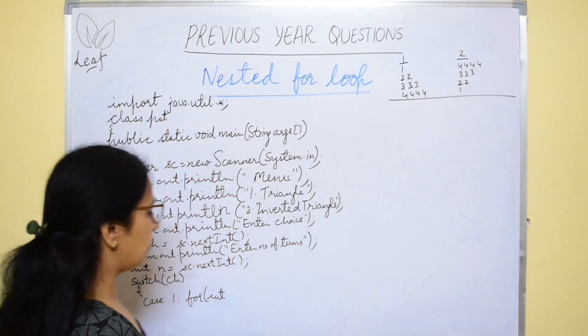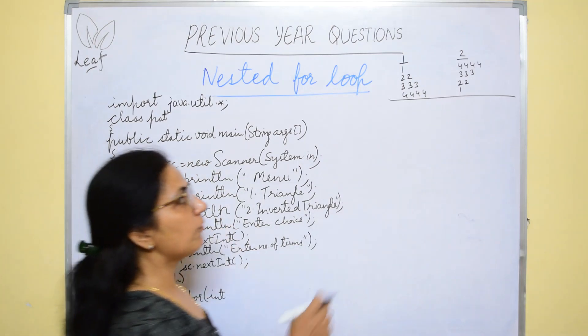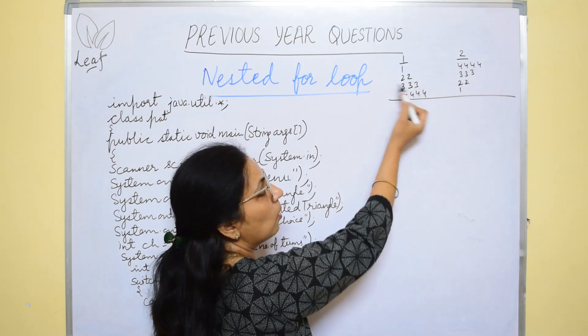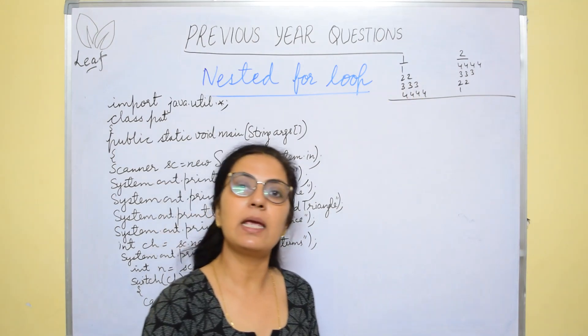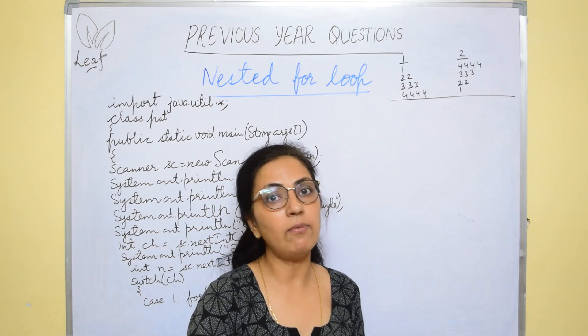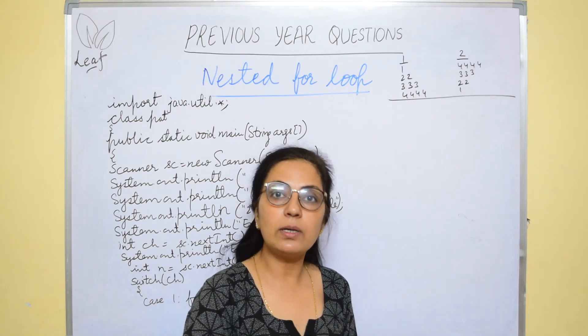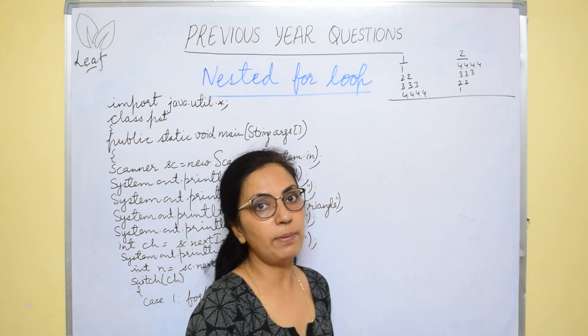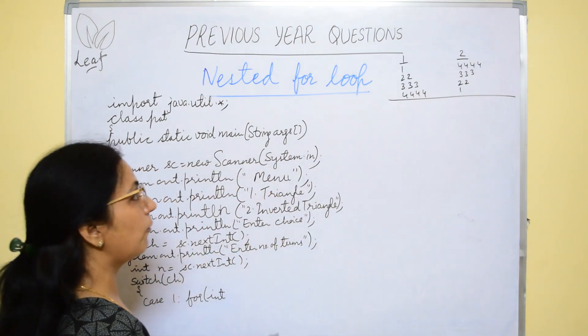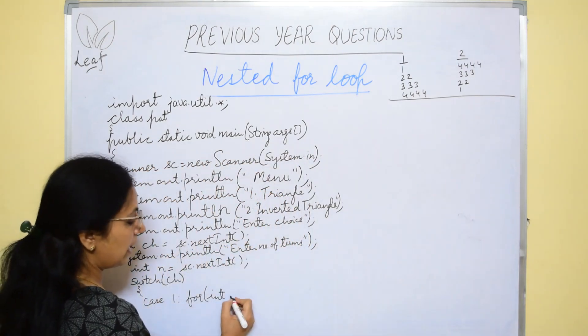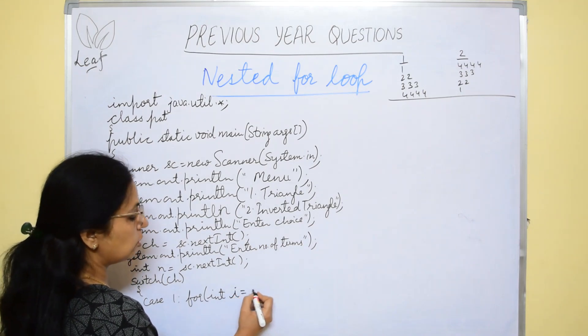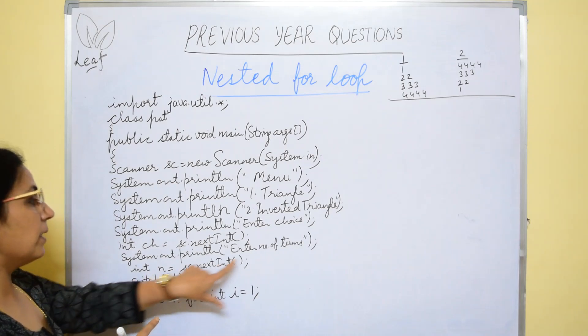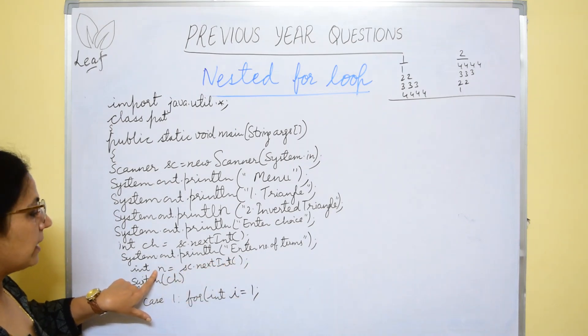Triangular pattern, right angle triangle. I told you if the numbers are same in one row, in each row the values are same, then printing variable will be i variable. That is the outer loop variable will be the printing variable. You can refer to the previous video of this topic for further details.